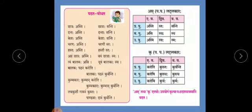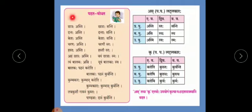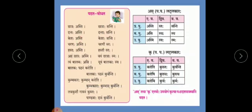Reading the sentences: chhatrah asti, chhatrahau stah, chhatrah santi, kesah asti, kesau stah, kesah santi, charnaustah, hastah asti, hastau stah, aham chhatram asmi, vayam chhatrah smah. Here you can see that 'chhatrah' is singular and 'chhatrah' plural. As the number changes, the kriyapad also changes from singular to plural form: asti becomes santi, asmi becomes smah.